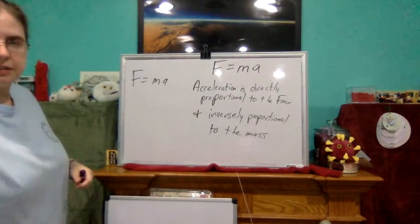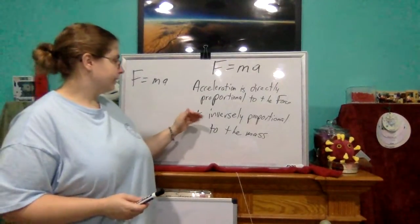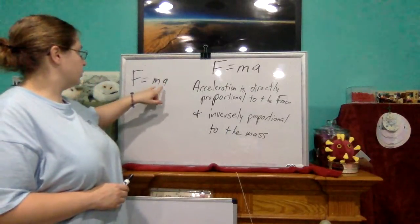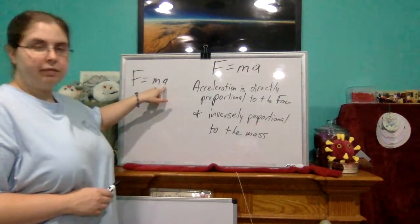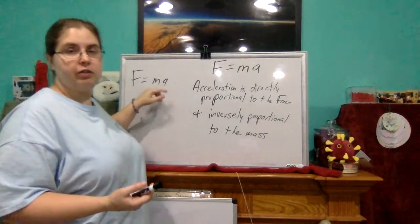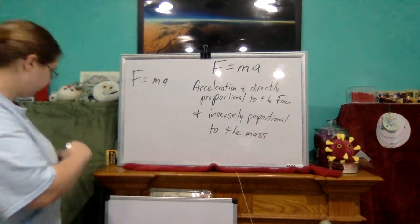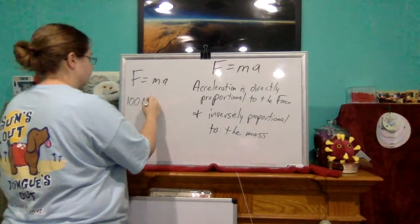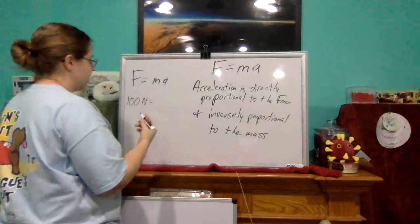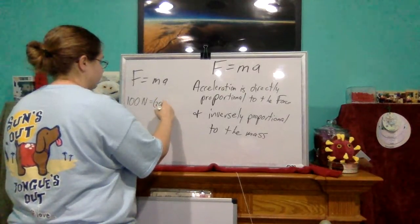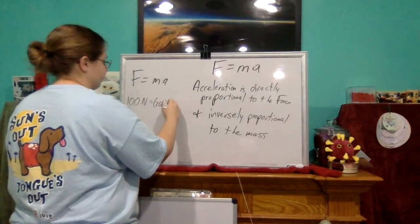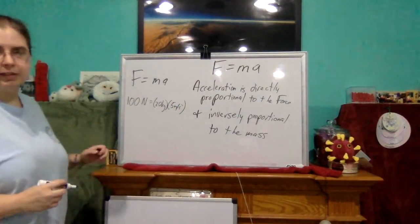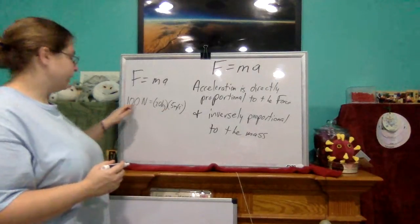The next part says that the acceleration is inversely proportional to the mass — meaning whatever happens to one of these, the opposite will occur to the other, assuming force stays the same. So let's say we have a force of 100 newtons, because we have a 20-kilogram mass and 5 meters per second squared for acceleration.